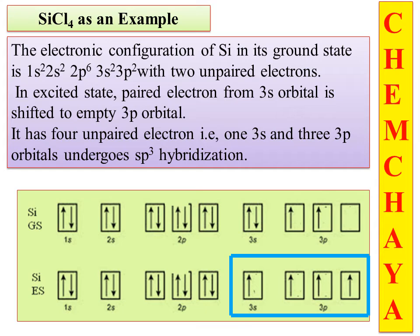I am interested only in the valence electrons, because only valence electrons take part in chemical bonding. The valence configuration is 3s2, 3p2 in the ground state. In the excited state, one of the 3s orbital electrons is promoted to a 3p orbital. The energy difference between 3s and 3p is very small, so migration is possible.